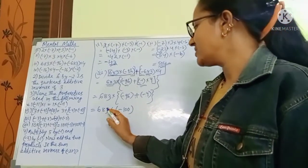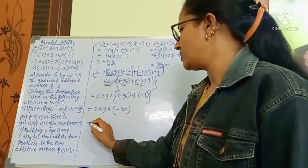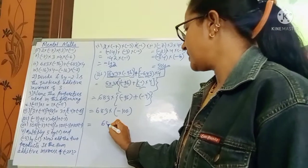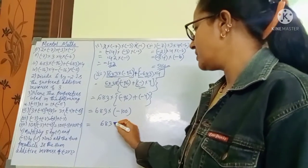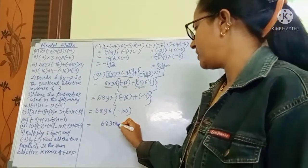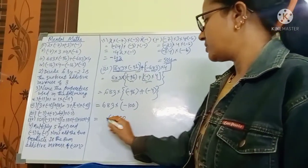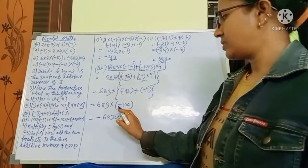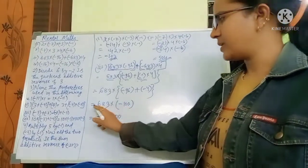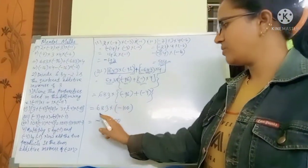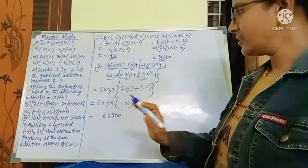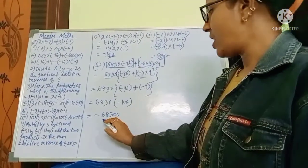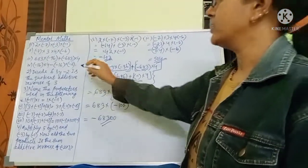So 683 into minus 100. The sign will be negative, because negative and positive multiply to give a negative value. This is the answer for the third problem.